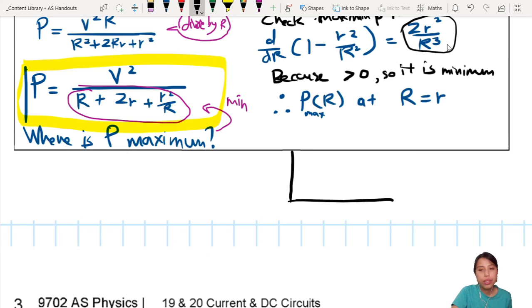Plot ready. You will see it looks something like this. P against R. Plug all this thing in: 1/(R + 2r + r²/R). It will look like this. And this maximum point is what we just found up here, where R = r. And this is maximum power, P max.